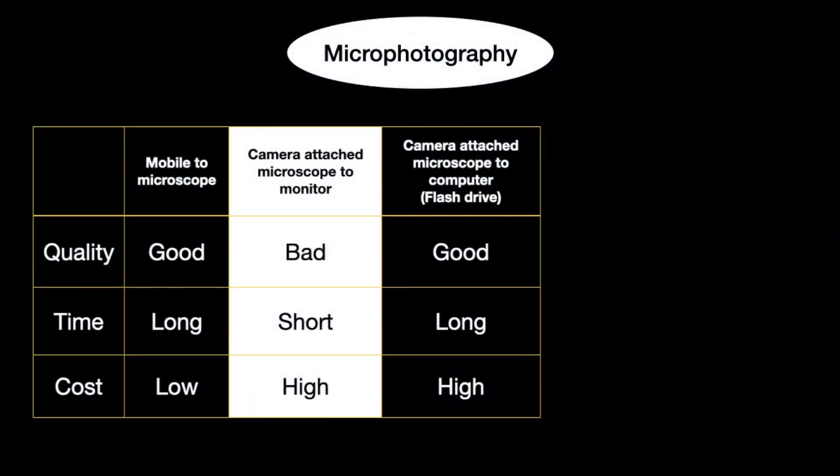The third method is a camera attached to the microscope and also connected to a computer. Pictures are stored in the computer and transferred via flash drive. Quality is very good, but it takes a long time — you must take the picture, save it, edit it on the computer, then transfer it. Cost is also high because you need a microscope, a camera, and a computer.